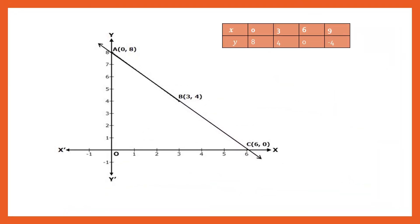Plot the points (0, 8), (3, 4), (6, 0), and (9, negative 4) on a graph paper, and joining all these points, we can see a straight line which will be the graph of our linear equation.